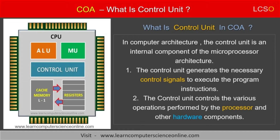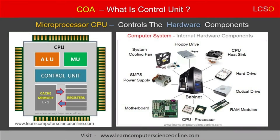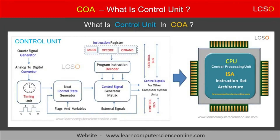The control unit is a part of the microprocessor and it is responsible to handle all the control operations performed by the processor. The control unit controls the operations of the various hardware components by generating the control signals. These control signals are transmitted to the hardware components along the network of control buses. The control bus is a wired connection between the processor and the hardware component, which carries the control signals.